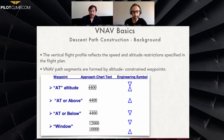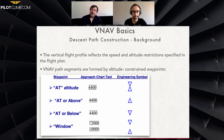The next slide is quite interesting because it's going to help us understand what symbols we're going to use in the VNAV and what the meaning of those symbols is. The vertical flight profile reflects the speed and altitude restrictions as specified in the flight plan — those are the constrained waypoints.